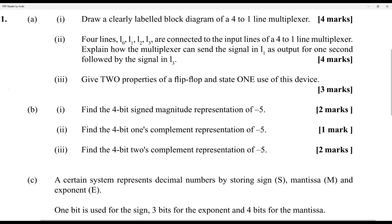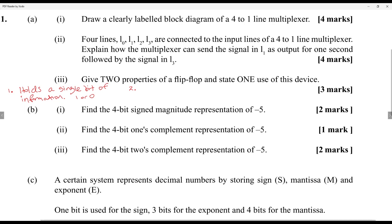Give two properties of a flip-flop and state one use of this device. A flip-flop holds a single bit of information — one or zero. A second property is that it's a bistable device, meaning it only has two stable states. One use is that it can be used in a register in a CPU, in memory, or in auto store memory.